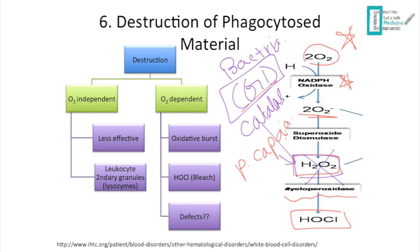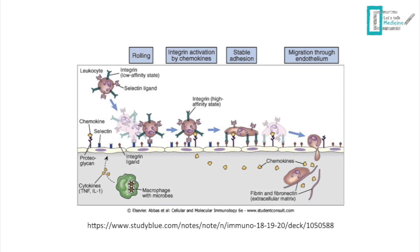Myeloperoxidase (MPO) deficiency means the patient cannot produce bleach. Most patients are asymptomatic, but they have an increased risk of Candida infections. The oxygen-independent pathway uses secondary granules and lysozymes but is less effective than the oxygen-dependent pathway. This diagram summarizes the full sequence from margination through chemotaxis, transmigration, and phagocytosis.